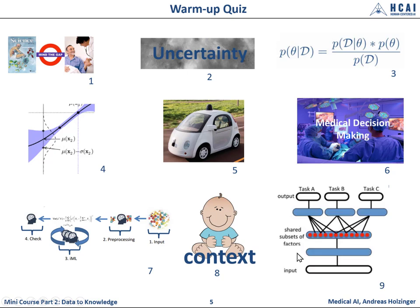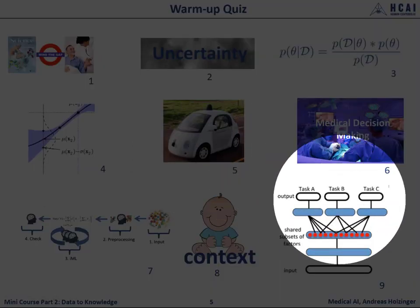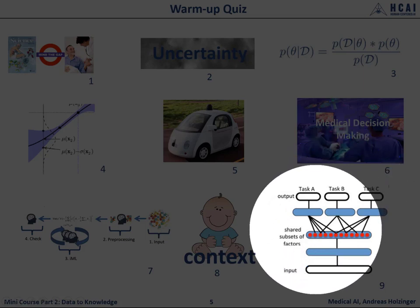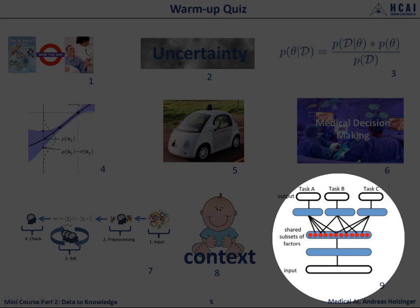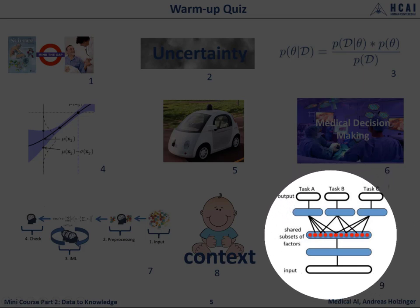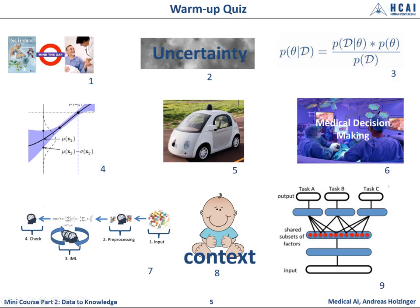A final extra question: what important guiding principle of machine learning can you infer from this picture? This shows multiple tasks — task A, task B, task C — solved using a shared subset of factors. This is transfer learning: a shared subset of factors which can deal with multiple tasks. Humans do this very well — you can quickly adapt to new situations and solve problems you have not seen before, transferring knowledge and adapting.